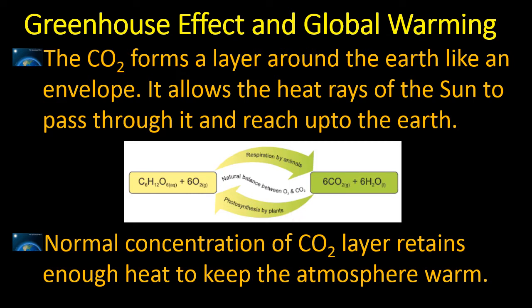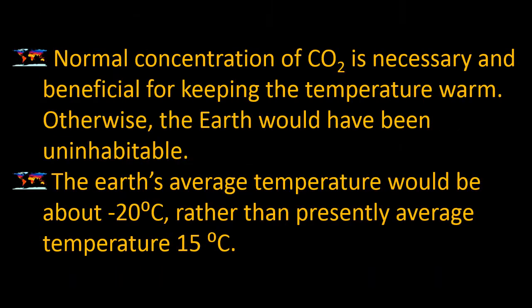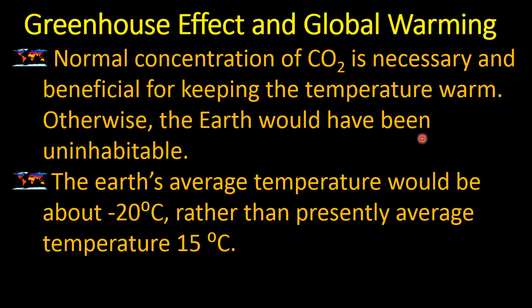The problem will arise when this natural balance is disturbed, and this balance is being disturbed due to human activities. Normal concentration of carbon dioxide is very necessary because it is beneficial for keeping the temperature warm. Otherwise, the earth would be uninhabitable. The earth's average temperature would be negative 20 degrees, rather than the present average temperature of 15 degrees. So it would be too cold without carbon dioxide, and life could not exist on it.